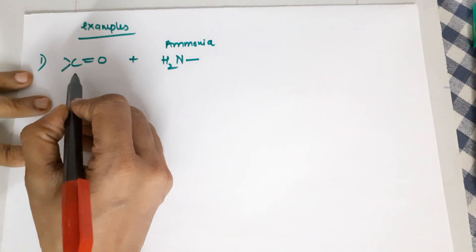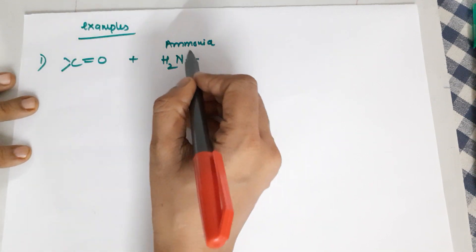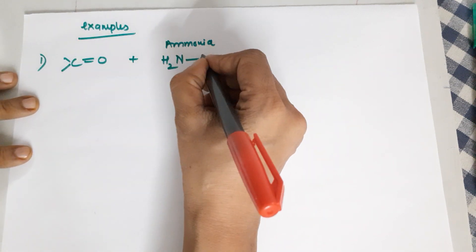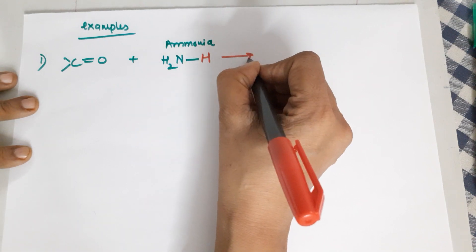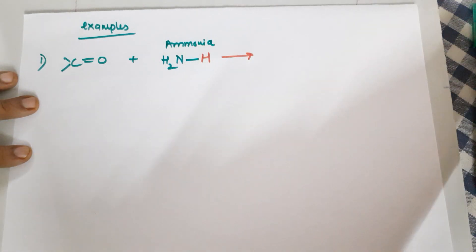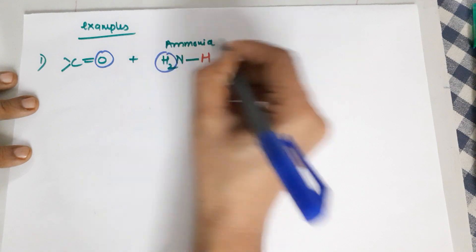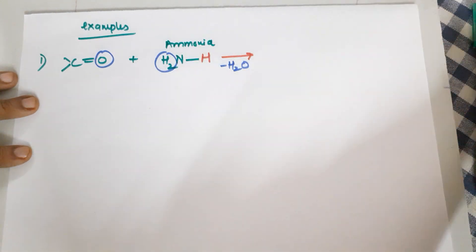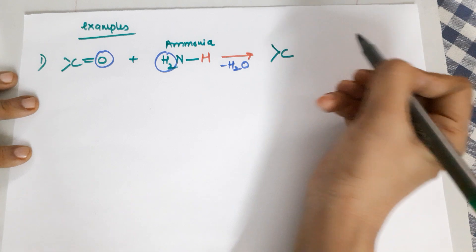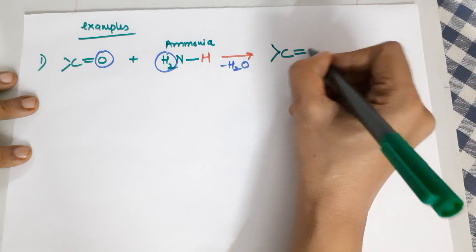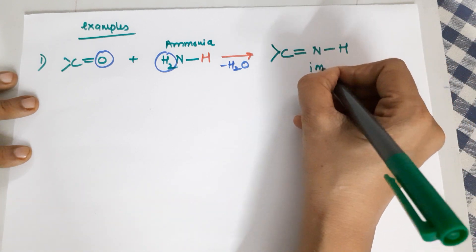We will now do the reactions under this category. The first reaction: your aldehyde or ketone reacts with ammonia, so Z is H. What happens is oxygen and two H's are lost, and the product formed would be whatever you started with, followed by a C=N-H double bond.